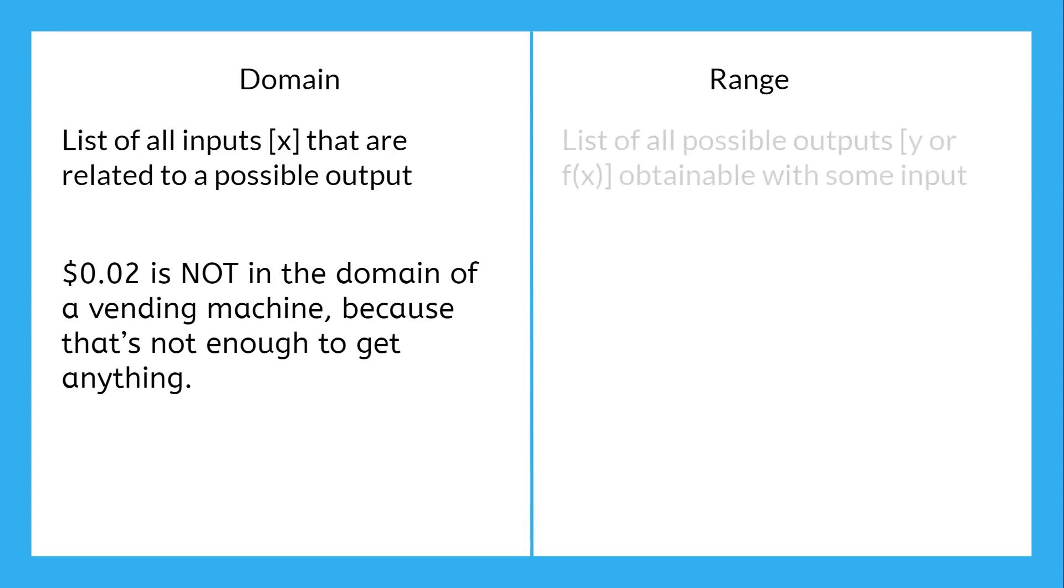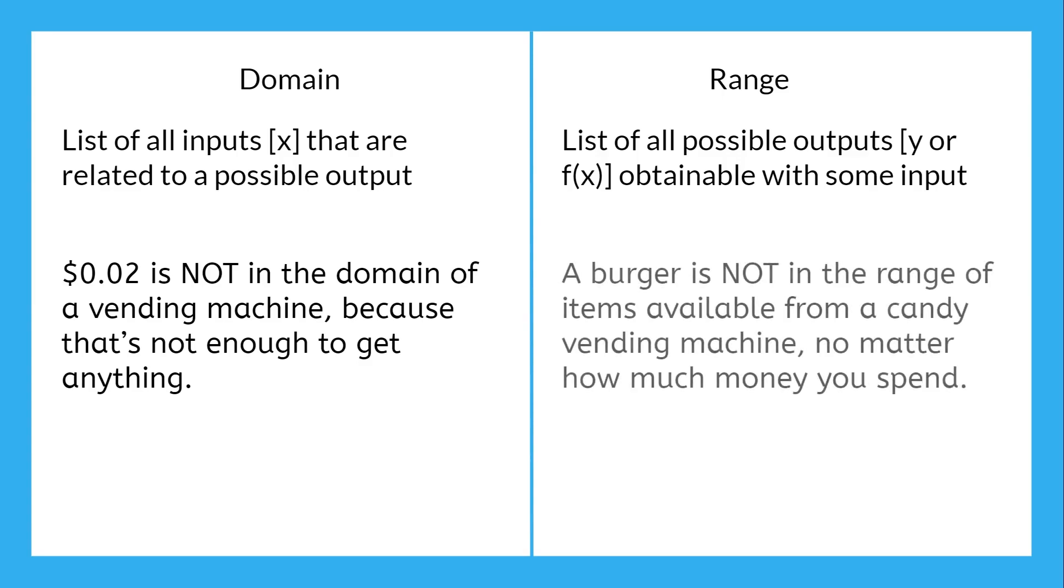The range, on the other hand, is all of the possible outputs, or f(x) or y values, that can be obtained by using some input. If a vending machine sells candy bars, you can't get a burger out of it, no matter how much money you put in. So burgers would not be in the range of items available from the vending machine.